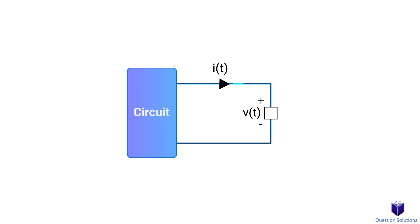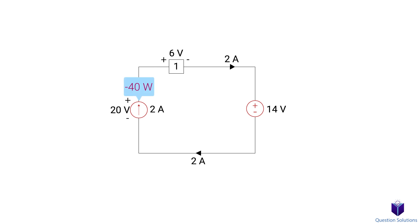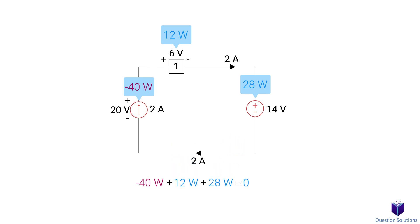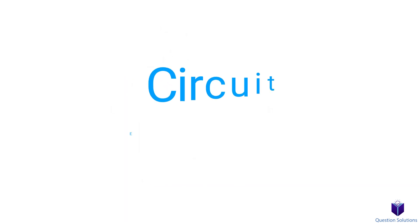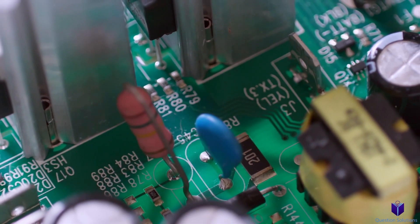In simple terms, point the current arrow into the positive voltage terminal of an element. When we calculate the power absorbed or supplied by each element in a circuit and add it all together, Tellegen's theorem states that the sum of power absorbed by all elements in an electrical network is zero — meaning all power supplied and absorbed in a circuit must equal zero.